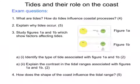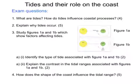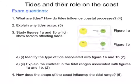Hopefully you've listened, read through the information, and made notes on those key aspects. You should now have the knowledge and understanding to answer the following questions: What are tides and how do they influence coastal processes? Can you explain why tides occur? Studying figures 1a and 1b, can you identify which type of tide is a neap tide and which is a spring tide, and explain the contrast in tidal ranges associated with them? And lastly, how does the shape of the coast influence the tidal range?